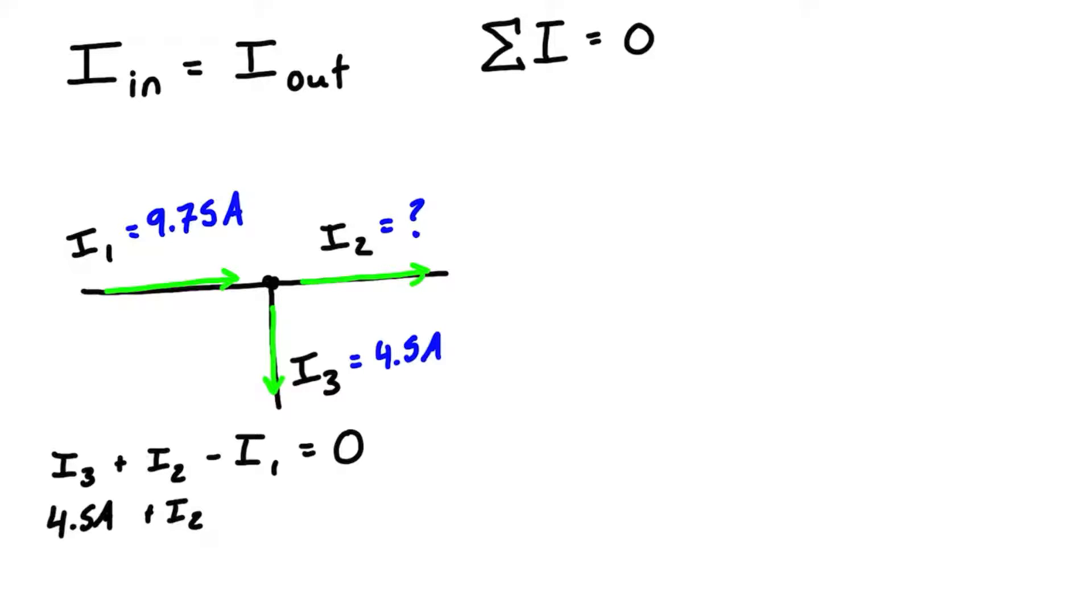i2 is a big mystery, and we have to subtract i1 which is 9.75 amps, set that equal to zero. We can just rearrange this—bring 9.75 to the other side and subtract 4.5, and we're going to find that i2 is equal to 5.25 amps.